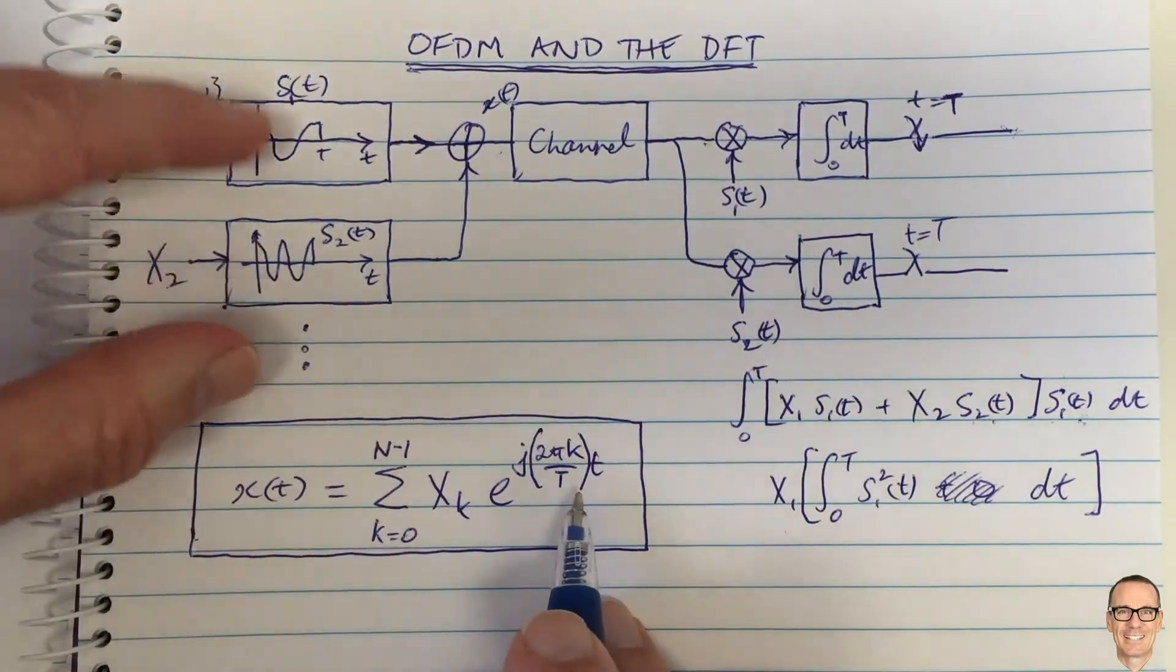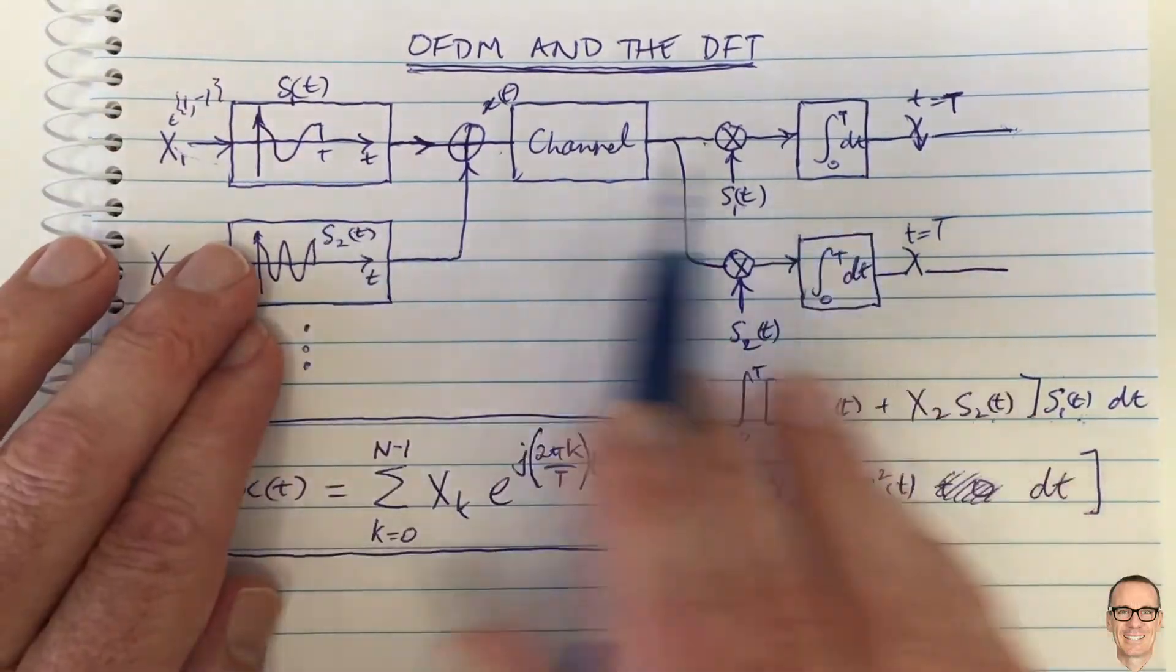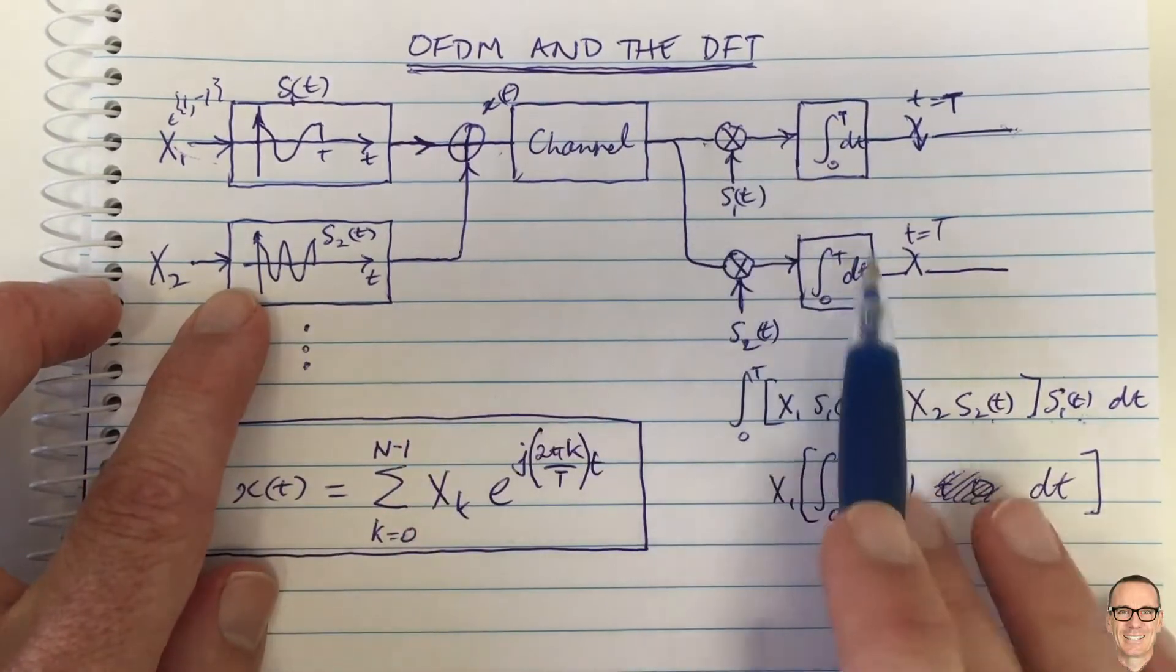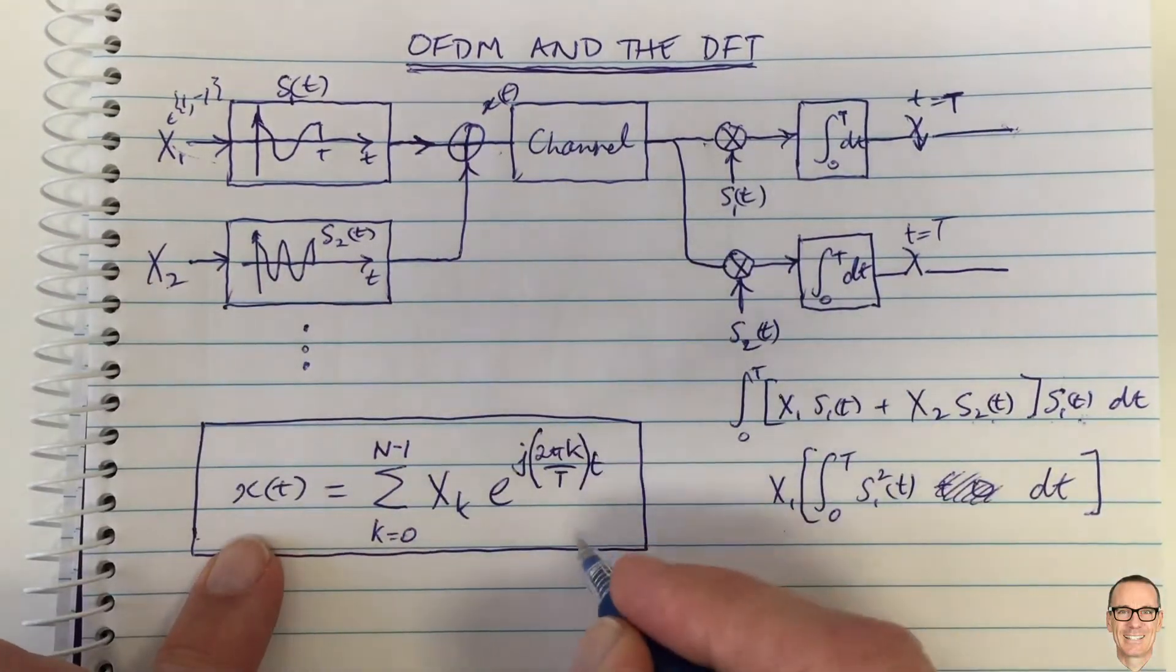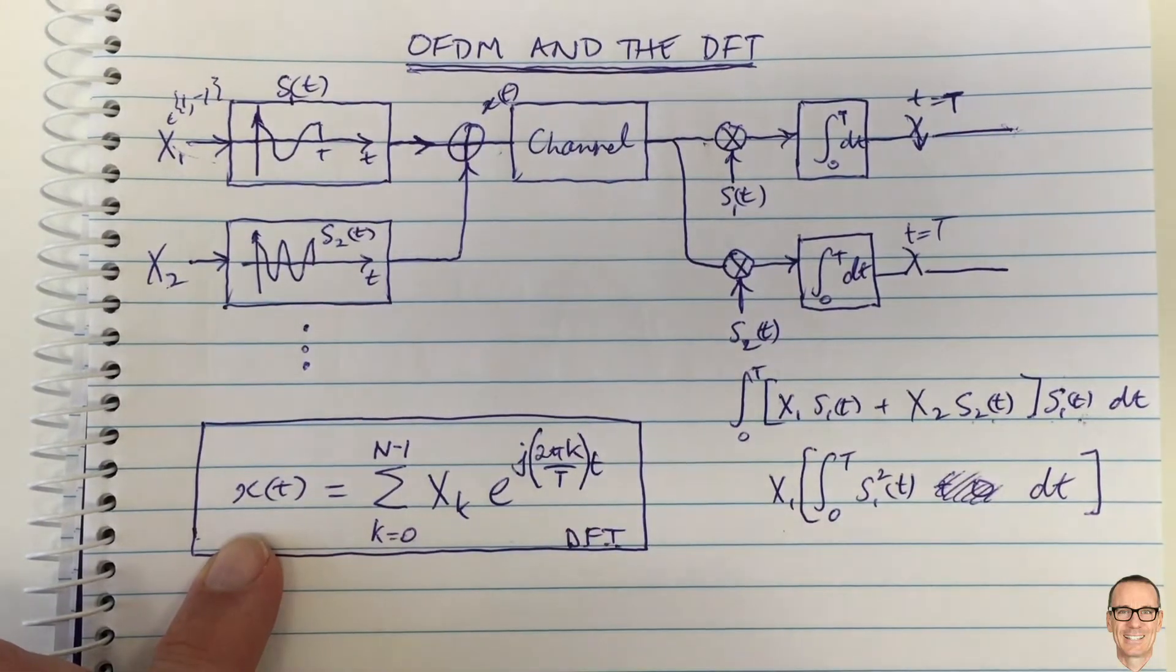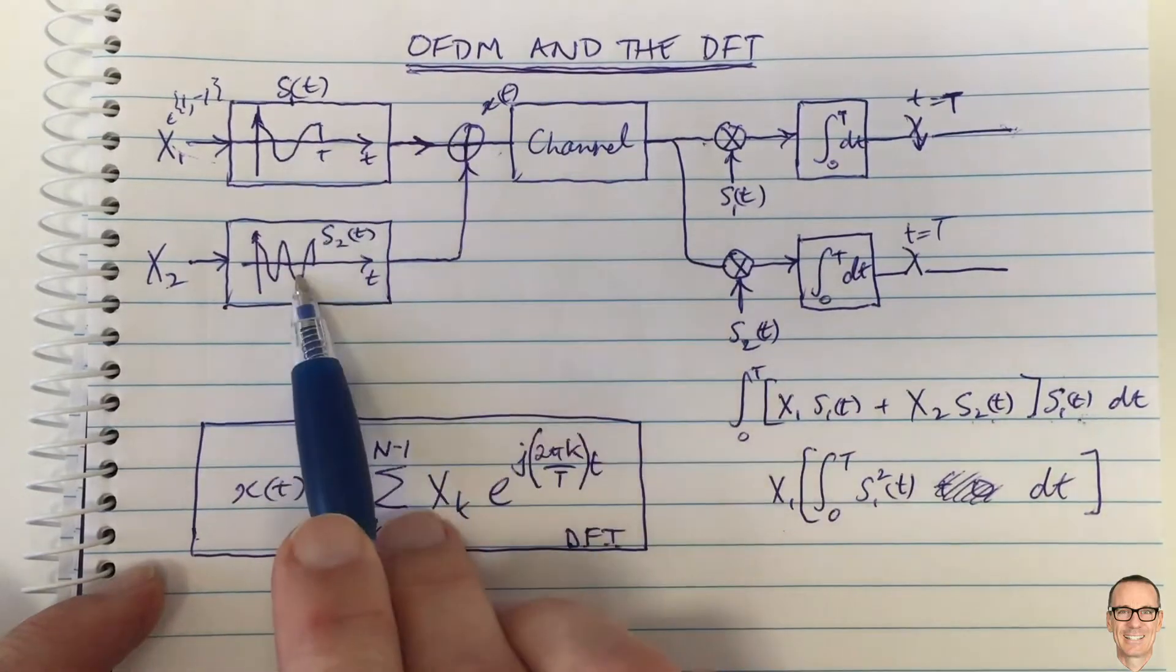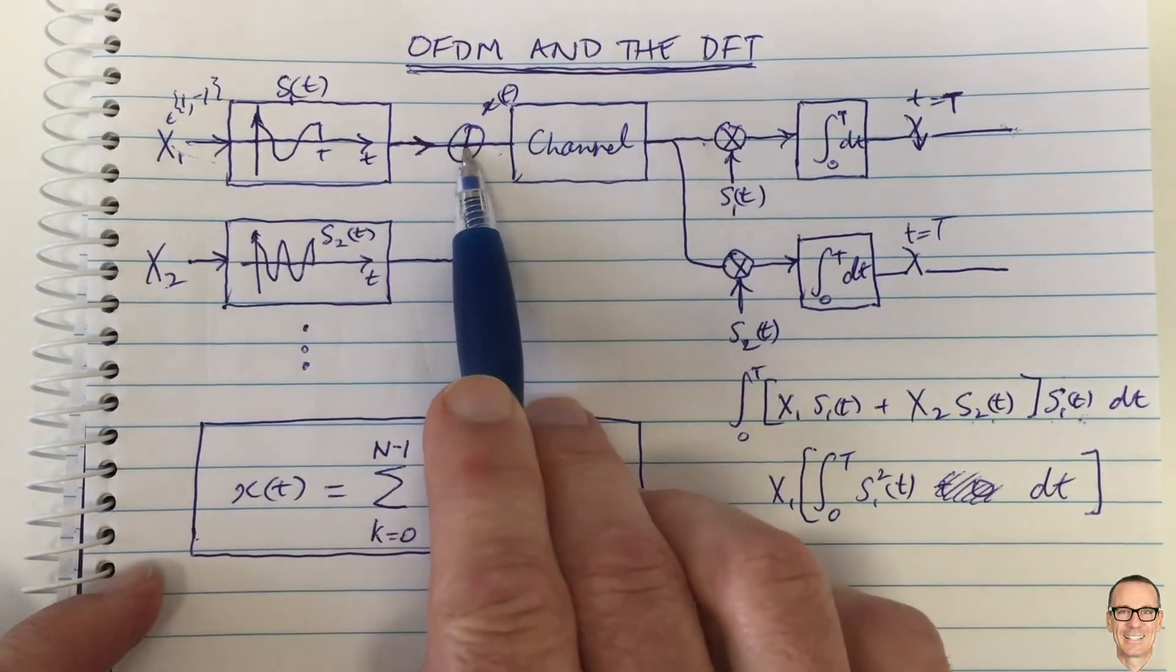We talked about this in terms of analog electronics to implement each of these blocks, but now we can see this is exactly the discrete Fourier transform equation. So instead of doing analog electronics for these filters and for this additional adding component.